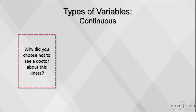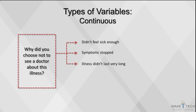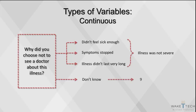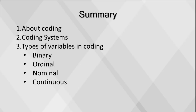You may also give response choices for a particular question but offer an 'other, specify' option as well, where respondents can write whatever response they choose. These open-ended questions can be a lot of work to analyze. One way to analyze the information is to group together responses with similar themes. Responses such as 'Didn't feel sick enough to see a doctor,' 'Symptoms stopped,' and 'The illness didn't last very long' could all be grouped together as 'The illness was not severe.' You will also need to code 'don't know' responses, which are typically coded as 9.